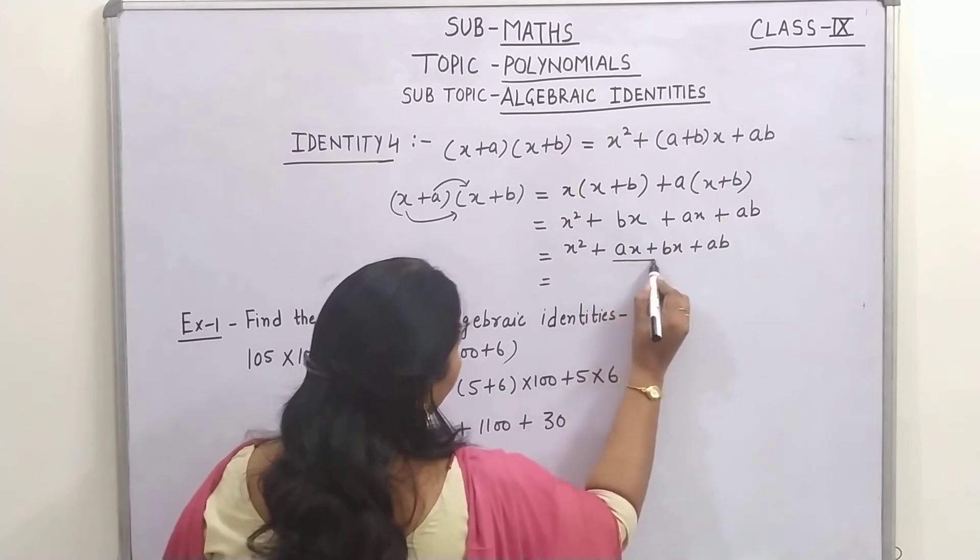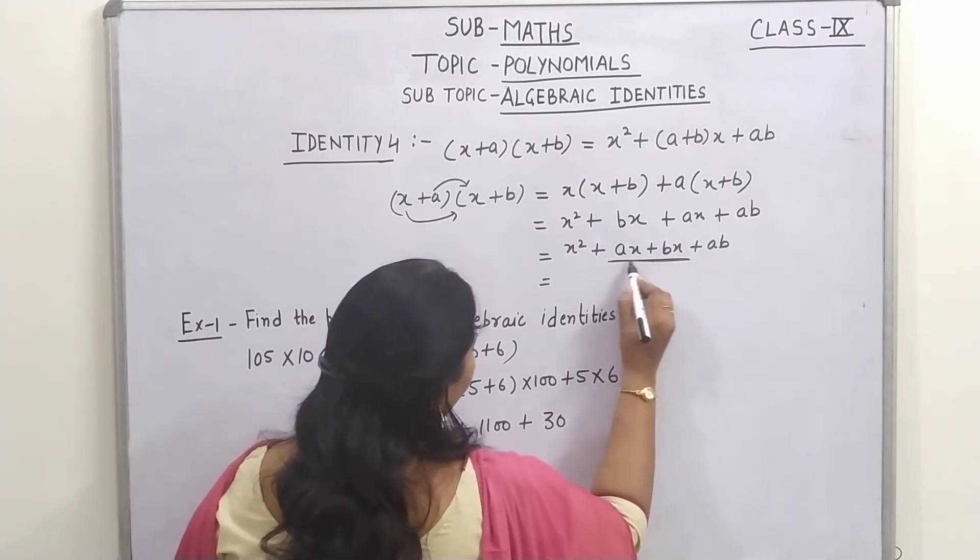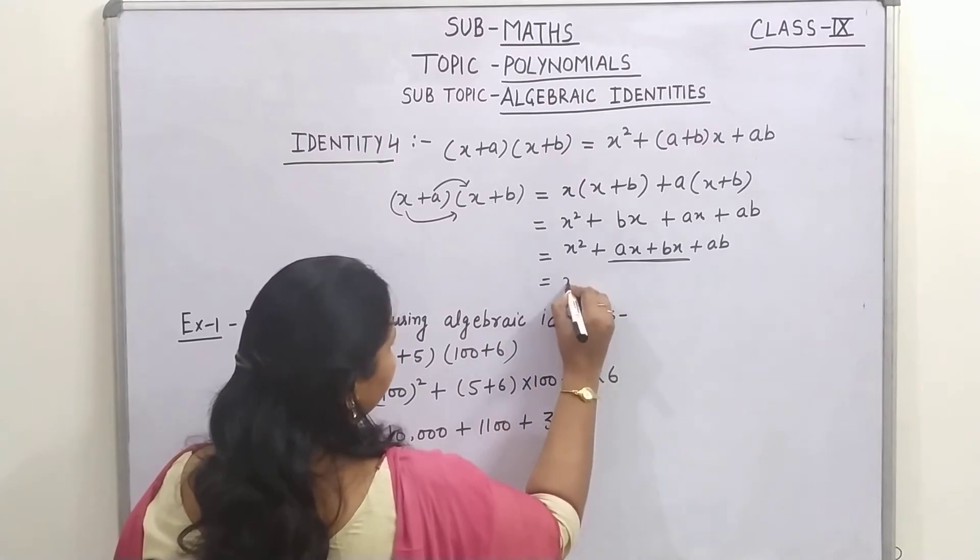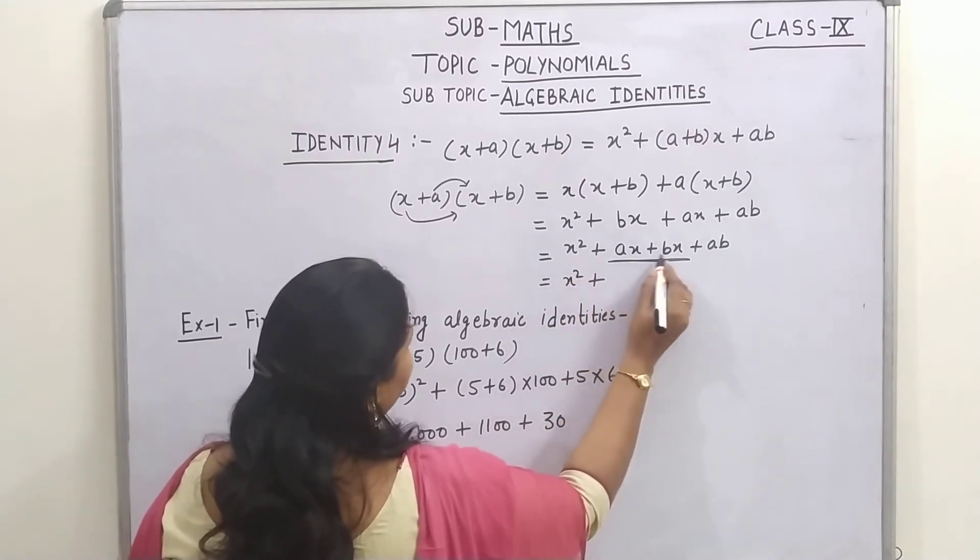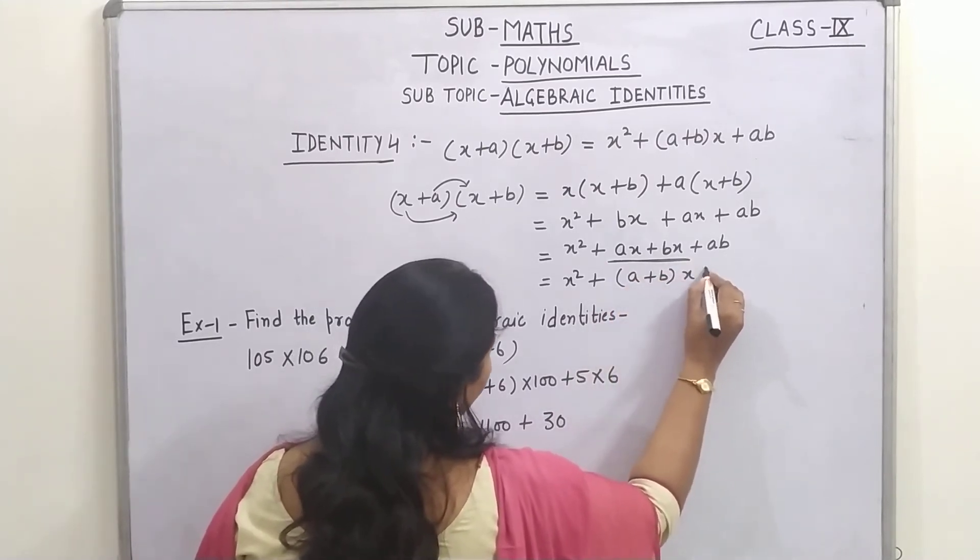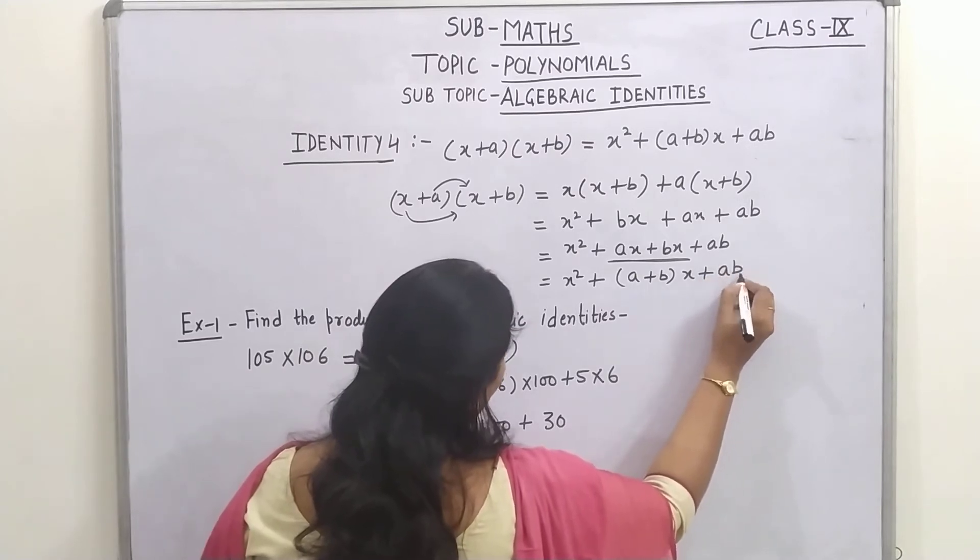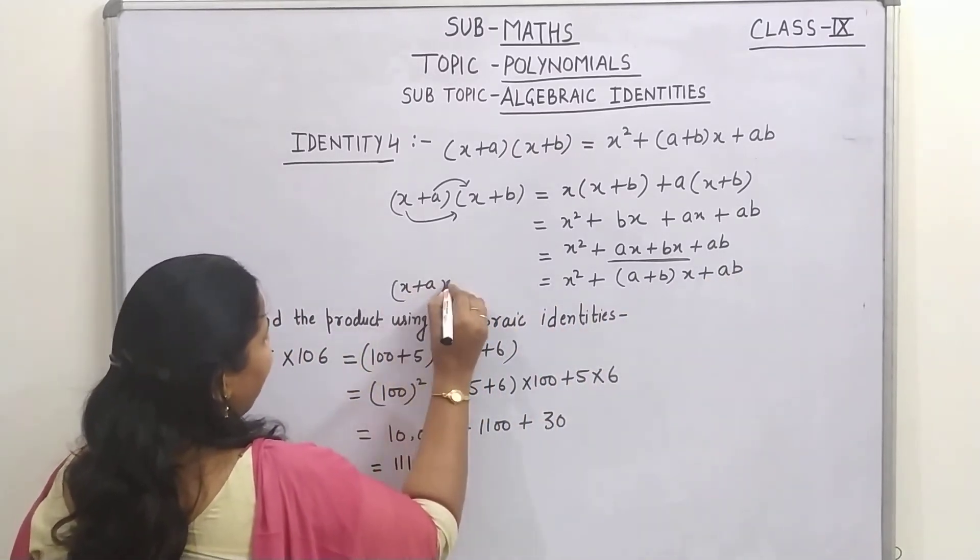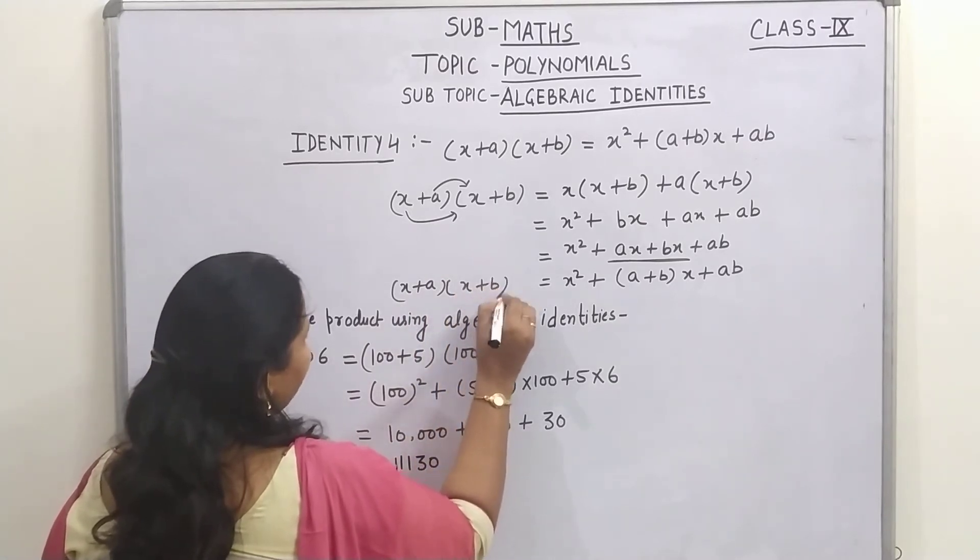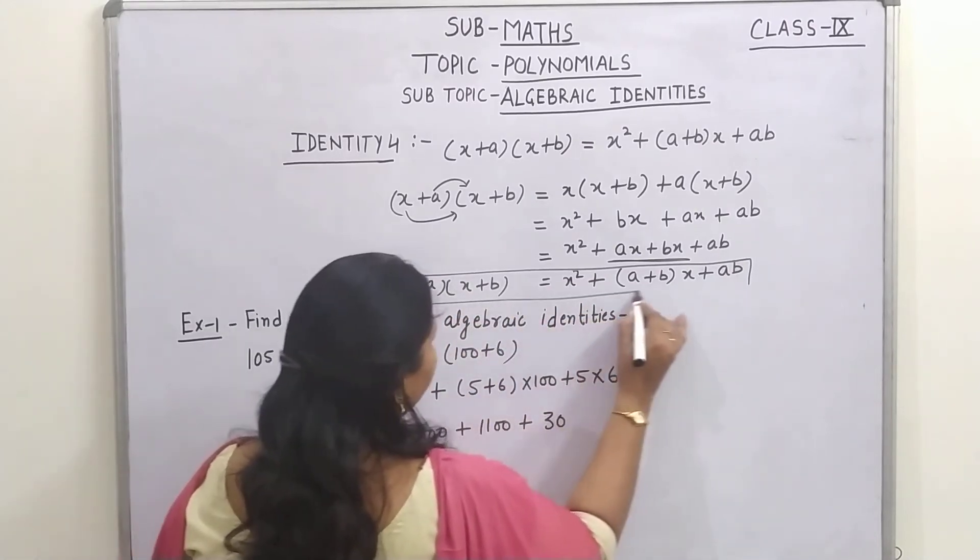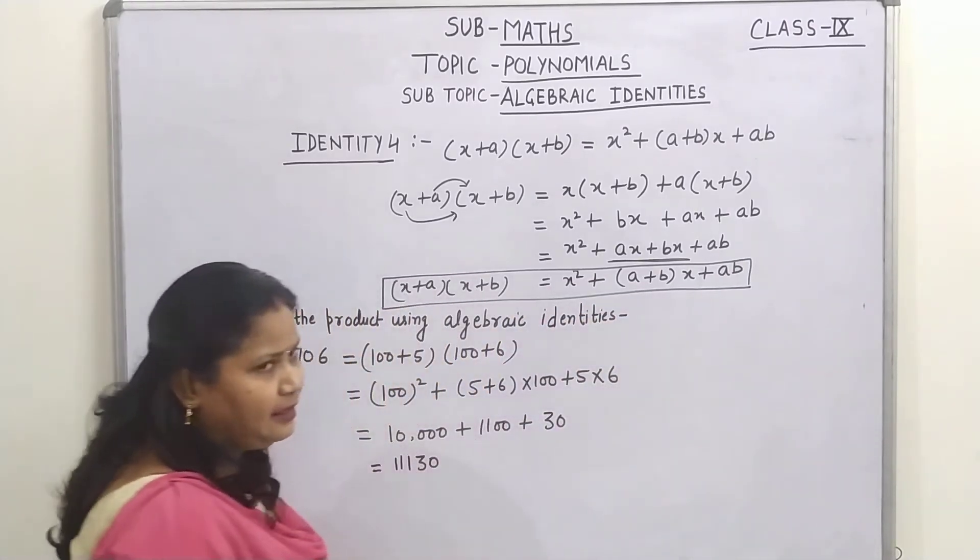Now you can see we can take x as a common factor of both the terms, so x square, now take x common, then the remaining factor will become a plus b and x, and plus ab. So children, here we get our identity x plus a, x plus b equals to x square plus a plus bx plus ab.